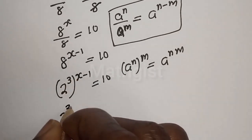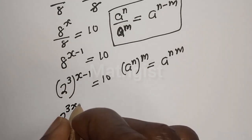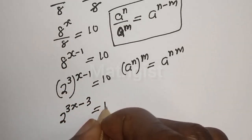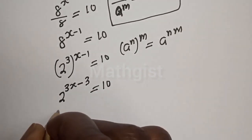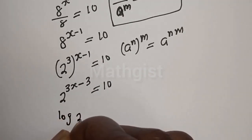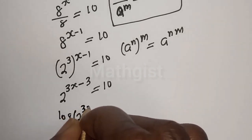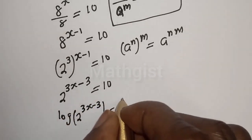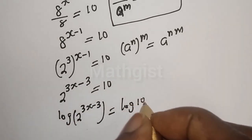So here we have 2 raised to the power 3 times s minus 3 times 1, which gives 2 raised to the power 3s minus 3, equals 10. Let's take the log of both sides: log of 2 raised to the power 3s minus 3 is equal to log 10.